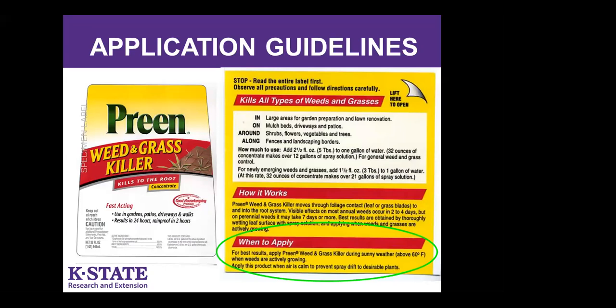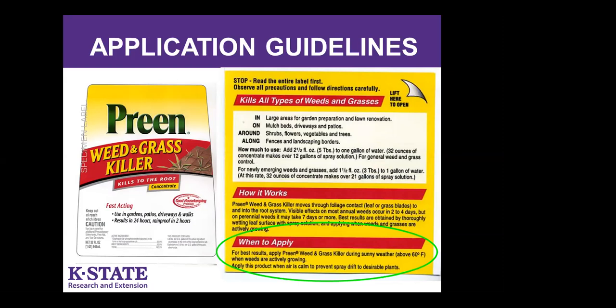Application guidelines on the label tell you when to apply. Back to the Preen glyphosate product — as is true of most herbicides, for best results you want to use them during sunny weather, above 60 degrees Fahrenheit, when weeds are actively growing, and when winds are calm so you're not getting drift onto undesirables. You need to pay attention to those temperatures — this one says above 60 degrees.